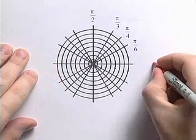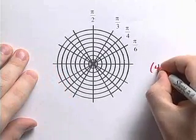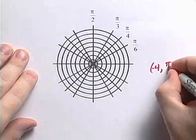We go to our grid. We're going to plot the point negative 4, pi over 3.